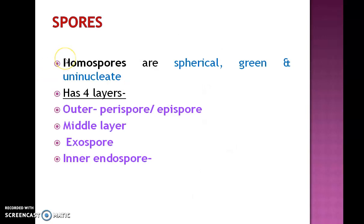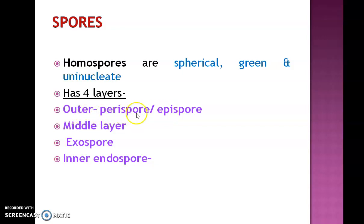Each spore is green in color, spherical in shape, uninucleate, and haploid in nature because they are formed from meiotic division. Each spore has four-layered walls. The outermost wall layer is the perispore or epispore. Inner to the perispore is the middle layer. Inner to the middle layer is the exospore. Inner to the exospore is the endospore. So the outermost wall layer is the perispore and the innermost wall layer is the endospore.